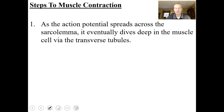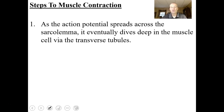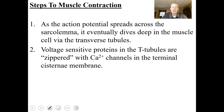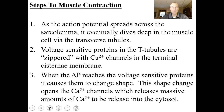Now we can dive into the steps of muscle contraction. As the action potential spreads across the sarcolemma, it eventually dives deep into the muscle cell because of the transverse tubules. There are voltage-sensitive proteins in the T-tubules that are zippered with calcium channels embedded in the membranes of the terminal cisternae — the sarcoplasmic reticulum. When the action potential reaches those voltage-sensitive proteins, that change in voltage causes them to change shape, opening the calcium channels so they release massive amounts of calcium into the cytosol, spreading across the myofibrils.